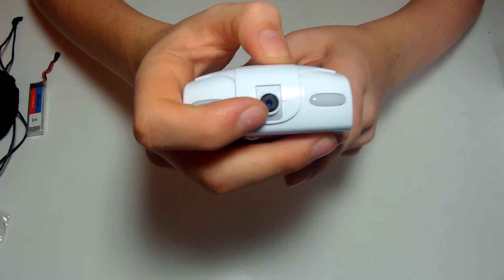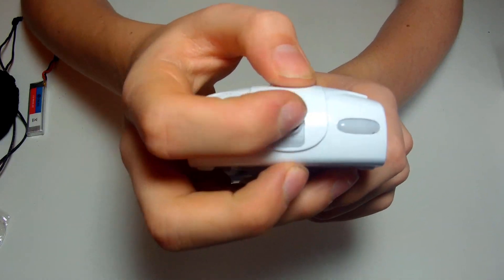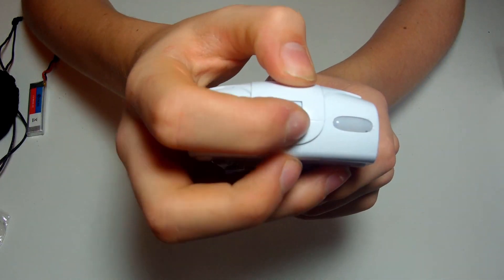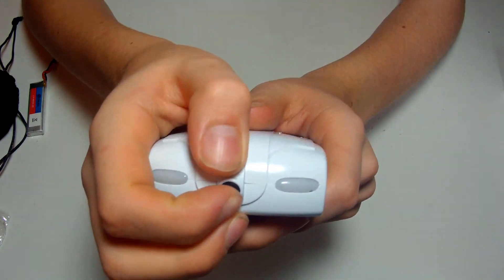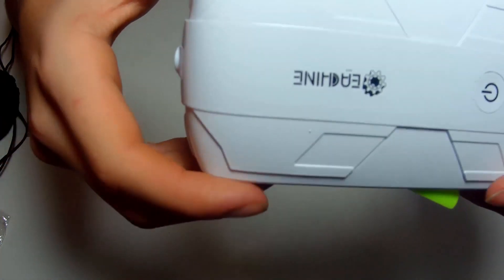Moving on, you can tilt the camera up and down to a certain degree. The camera is 720p and can do video and pictures. Both the video and pictures are controlled from your phone.